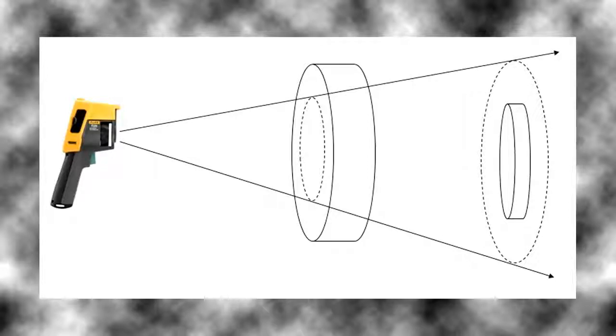So the rule of thumb for infrared devices is get as close as you can safely to make your measurement.